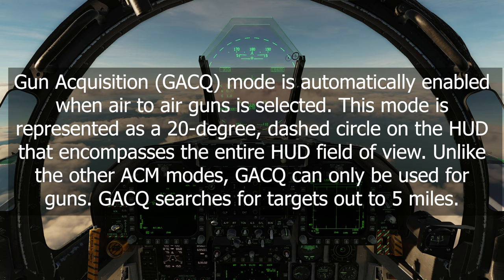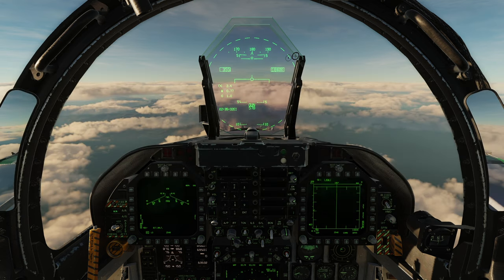Gun acquisition mode is represented as a 20-degree dashed circle on the HUD that encompasses the entire HUD field of view. Unlike the other ACM modes, gun acquisition can only be used for guns, and it searches for targets out to five nautical miles. If you're behind a bandit in gun acquisition mode, put the bandit into the dashed circle and it should automatically lock up. To unlock, hit the undesignate/nose wheel steering button. Note that in gun acquisition mode the radar is always in either ACM or single target track when the gun is selected, and it cannot be commanded to return to search from gun acquisition — you have to switch modes or change the weapon to return to RWS or TWS.